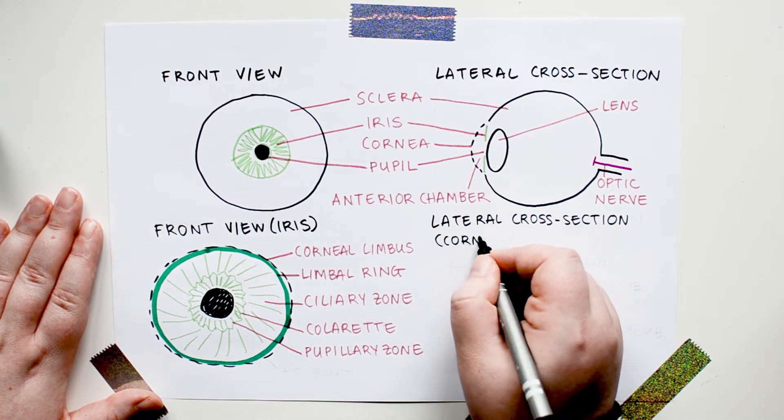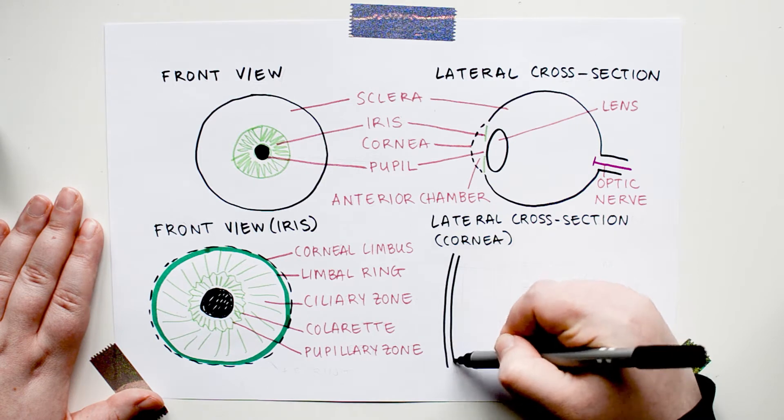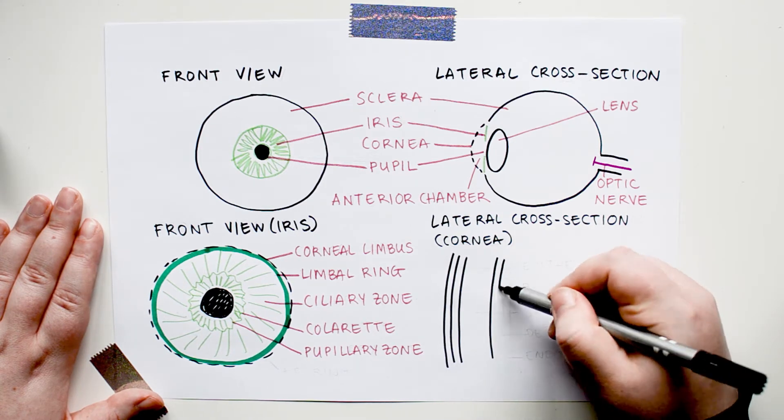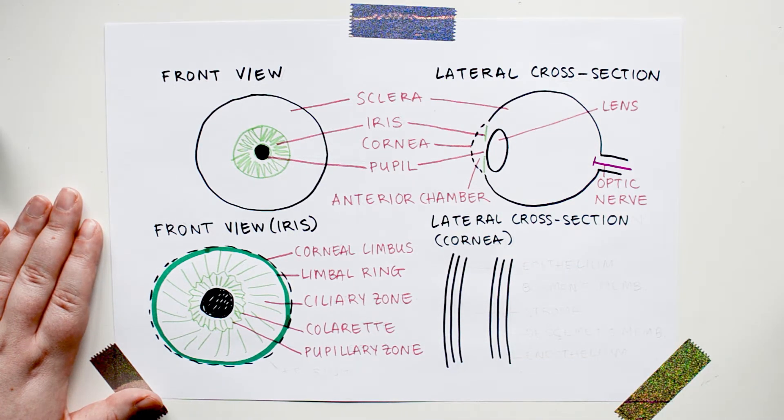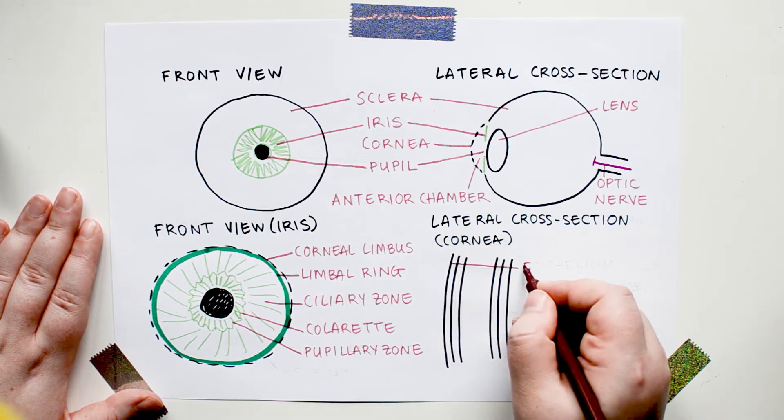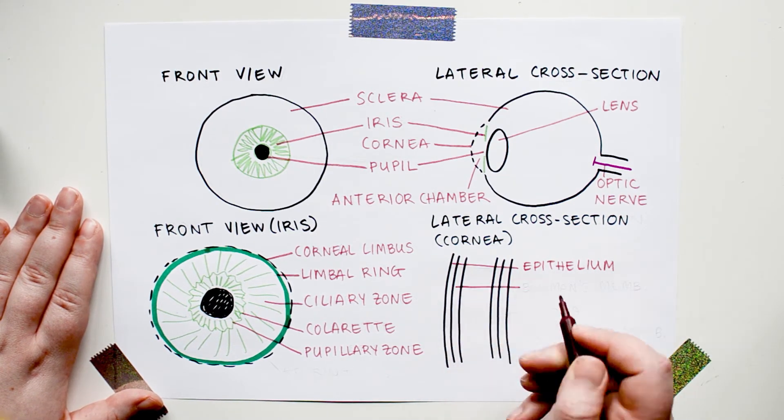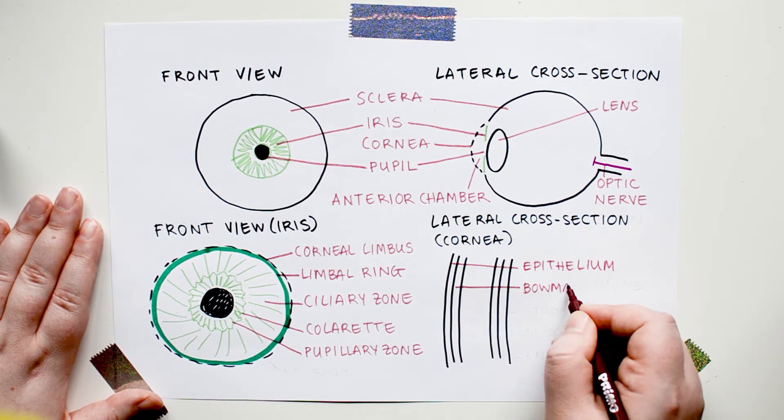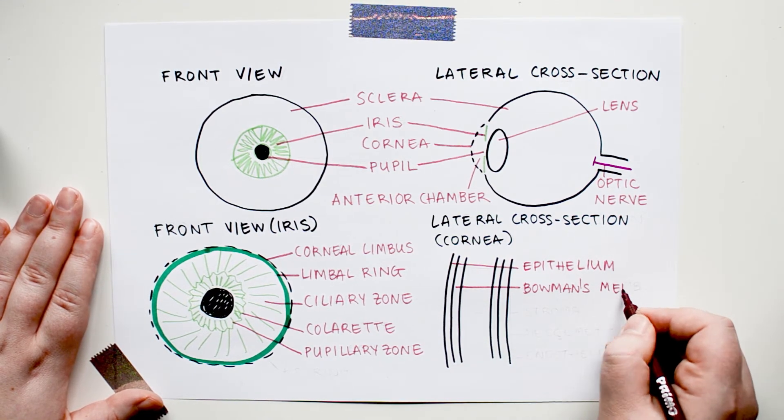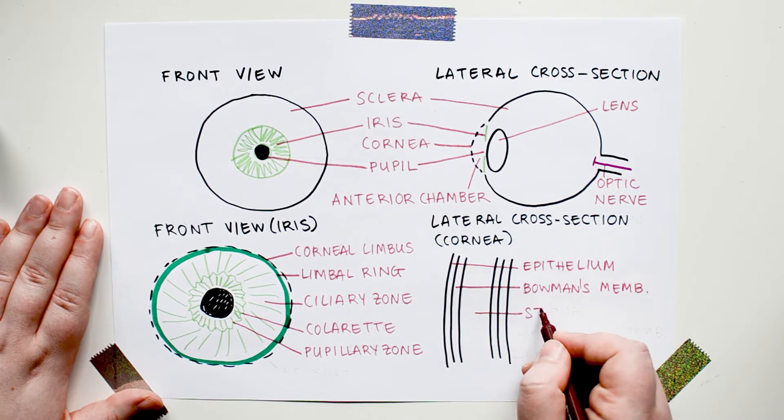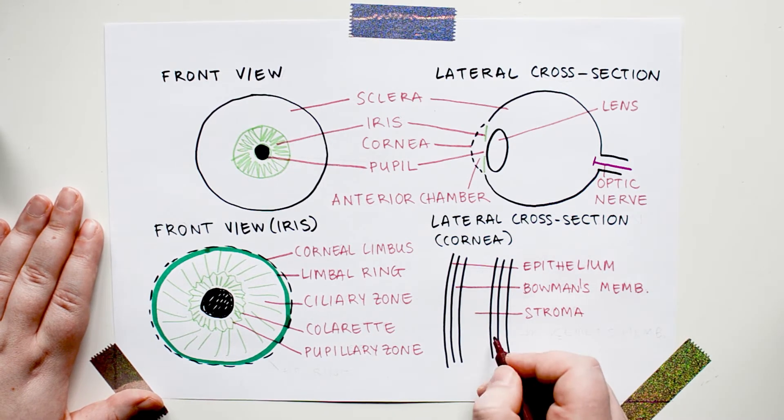But before we talk about that, let's go to the bottom right of the page and draw an extreme close-up of a small section of the cornea. The cornea has five major layers. One thin layer on the outside of the eye called the epithelium. A second thin layer called Bowman's membrane, or the anterior elastic lamina. A thick layer called the stroma.